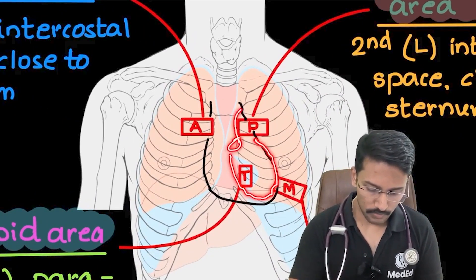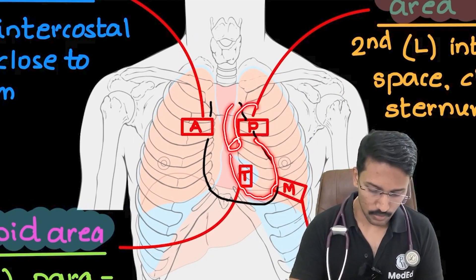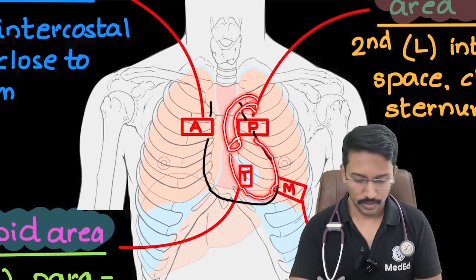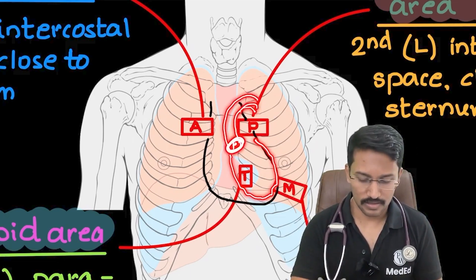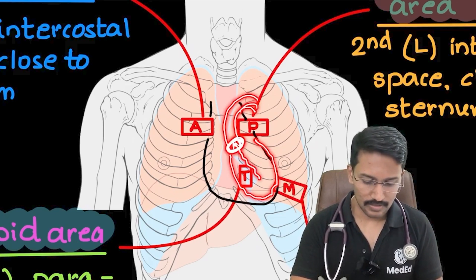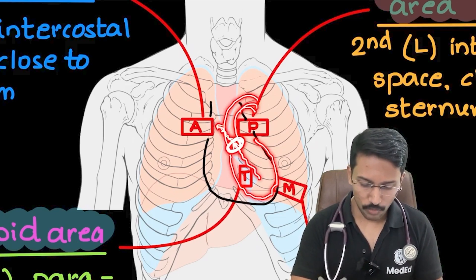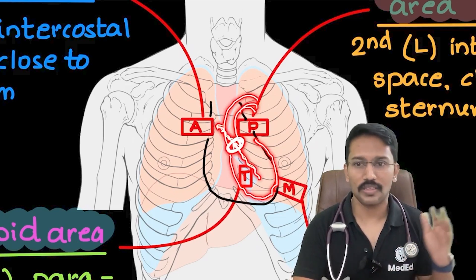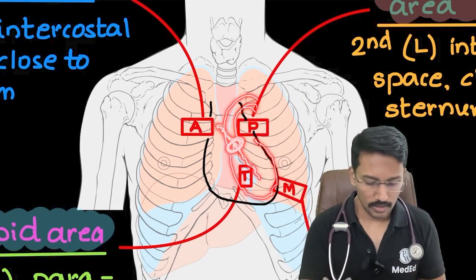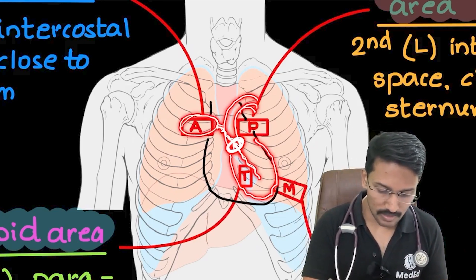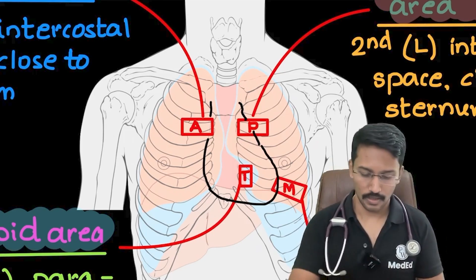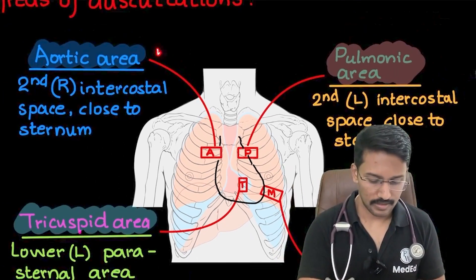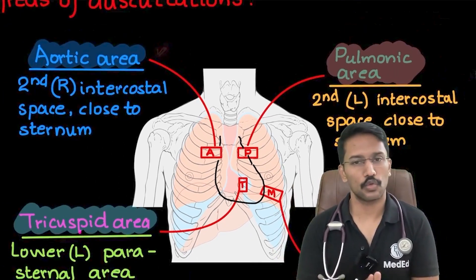This is my left ventricle, this is where my aortic valve will be, and this is how the aorta originates from there. The turbulence is being created at the aortic valve location, and the direction of the jet of blood is angled towards the right. That is why the sound will be best heard in the right second intercostal space — that is why the aortic area is in the right second intercostal space.